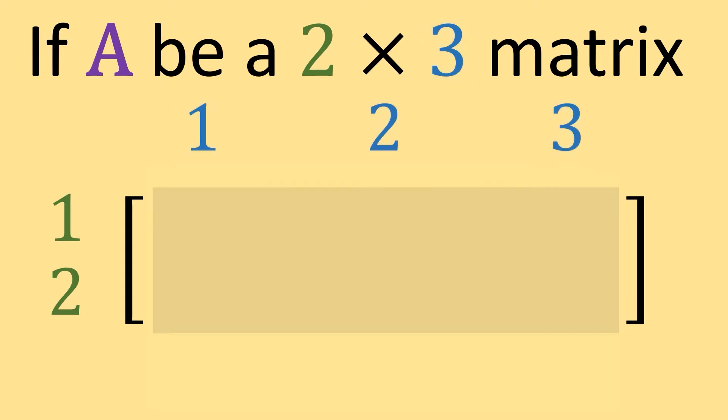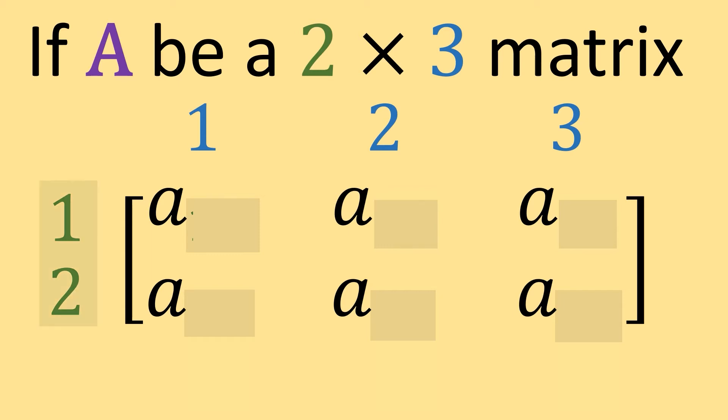And the general form of this matrix, when we don't have numbers, is just going to be the lowercase letter of the matrix name. So in each one of these positions, we're going to have lowercase a, and then we're going to have an index that tells us the exact position that we're in. And this index is just going to give us information about the row and the column that we're in.